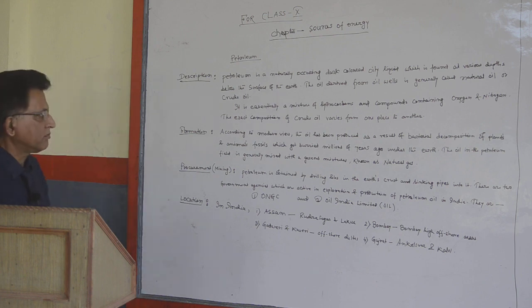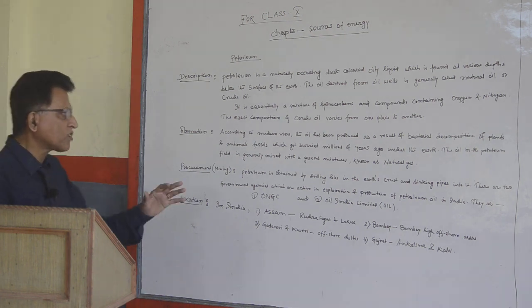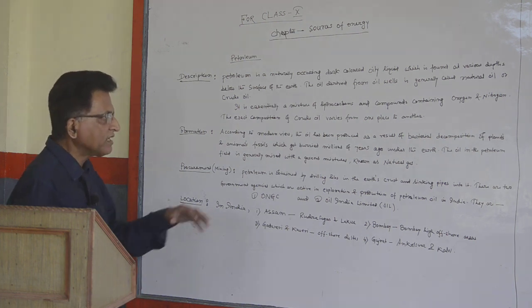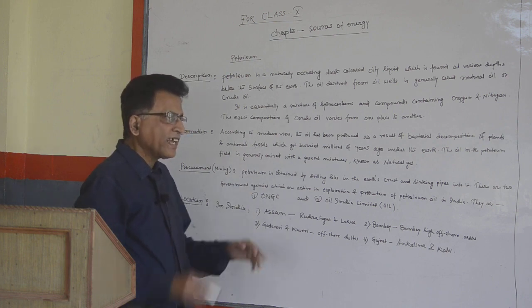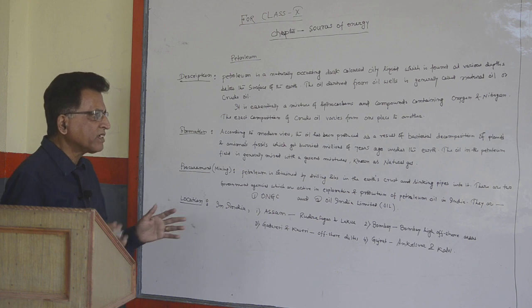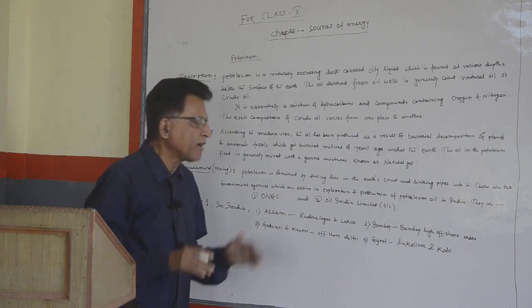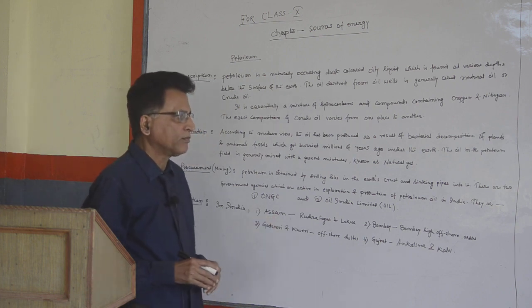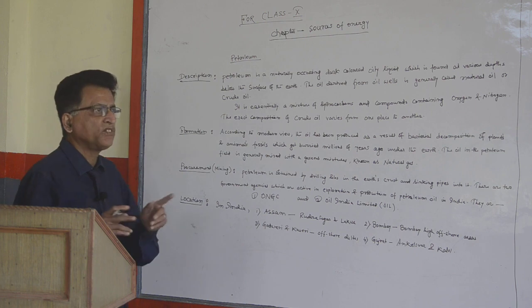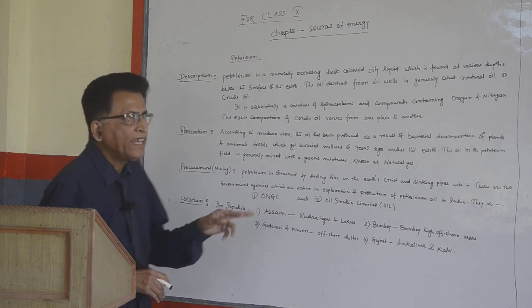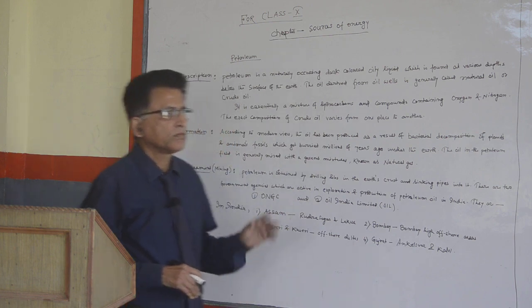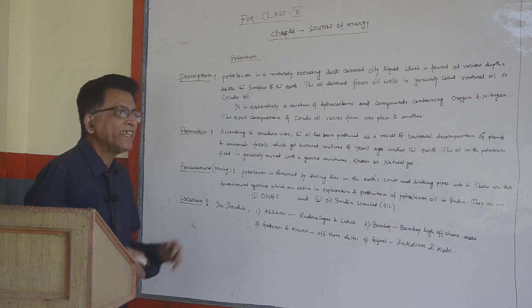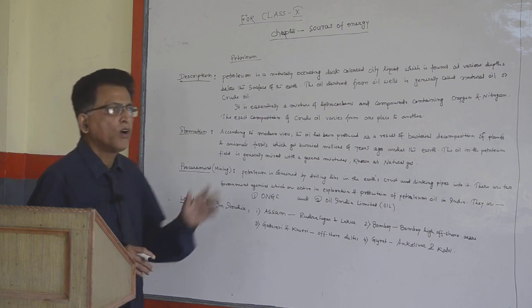Third, Procurement. Petroleum is obtained by drilling holes in the earth crust and sinking pipes into it. There are two government agencies which are active in exploration and production of petroleum oil in India. They are ONGC, Oil and Natural Gas Corporation. Second, Oil India Limited, abbreviated form OIL.